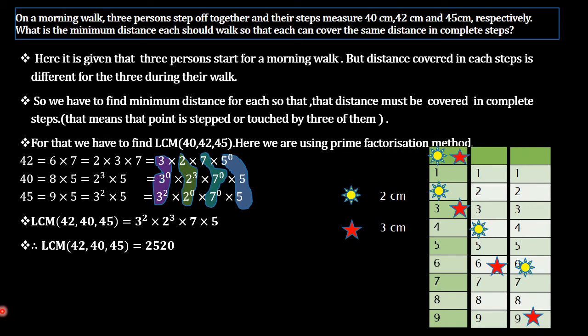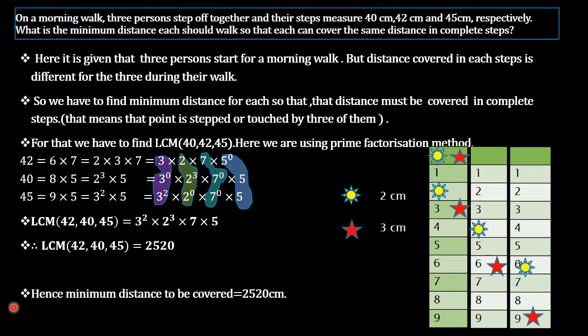A helpful hint: if you have values and need to find something greater than those values — such as a distance greater than 40, 42, or 45 cm — use the LCM. If you need to find something less than those values, use the HCF. Here we need a distance greater than these values, so we use LCM. Hence the minimum distance to be covered by all three is 2520 cm.